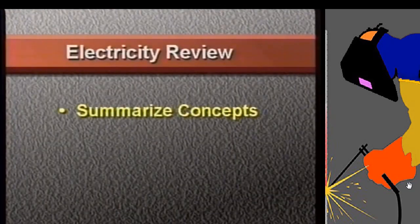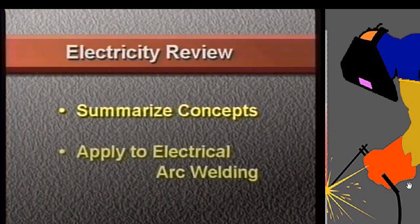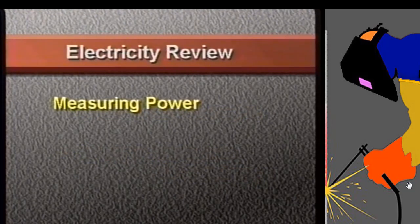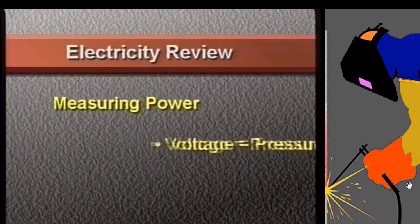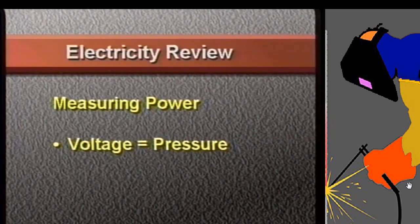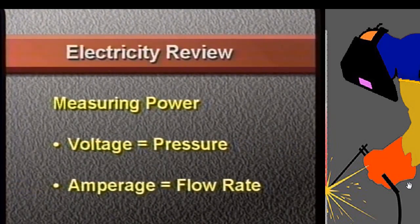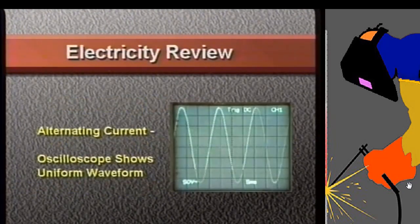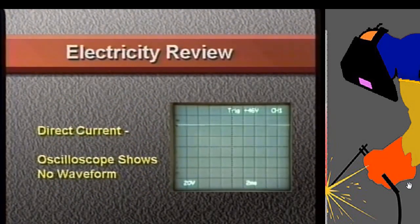Let's summarize what we've learned about electricity, then apply these concepts to electrical arc welding. Electrical power is measured using two main units: voltage, which is like water pressure, and amperage, which is like water flow rate. Alternating current has a waveform which can be displayed on an oscilloscope. Smooth direct current has no waveform.